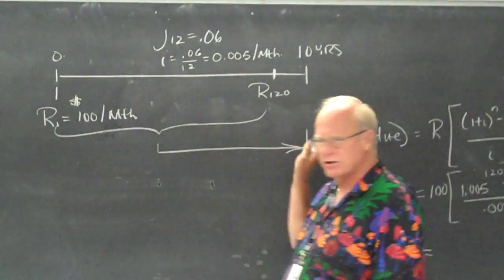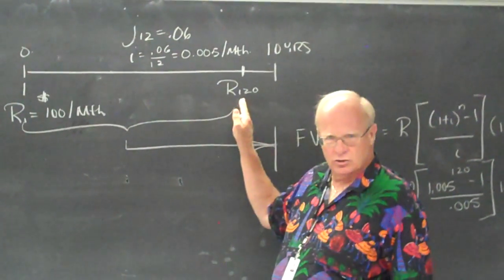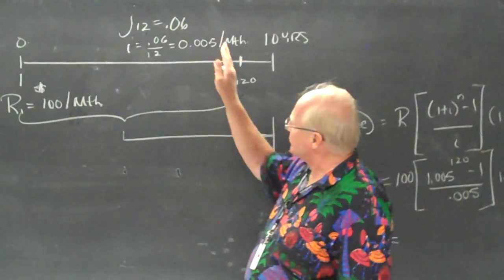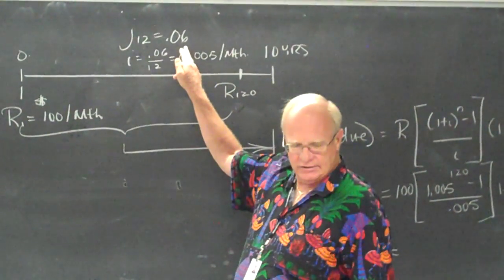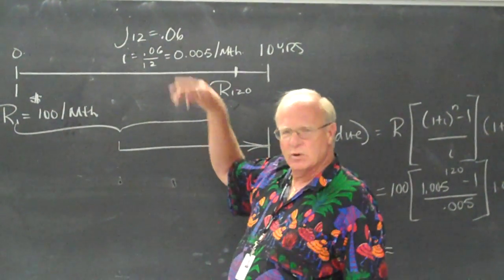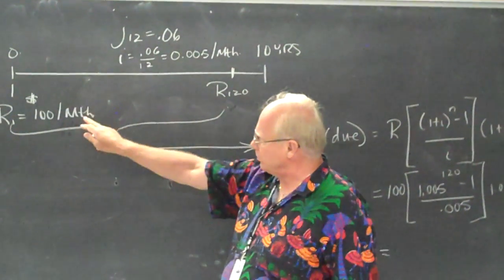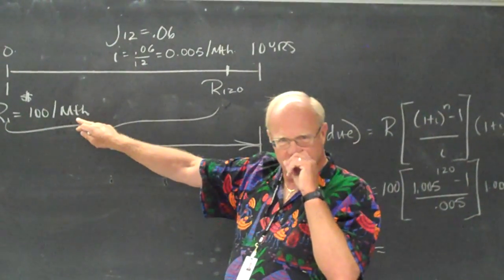The present value would be 0 because they haven't started doing anything yet. We are trying to calculate the future value. N would be 120 because there's 120 payments. The interest rate would be 6%, and when you go second function interest rate per year, it asks you two things.